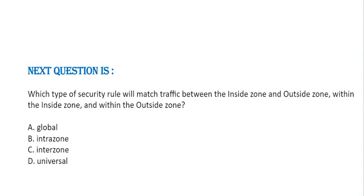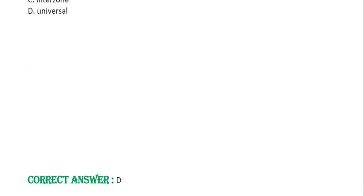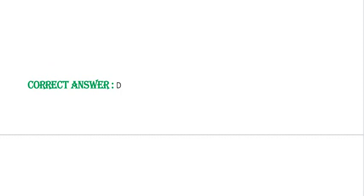Next question: Which type of security rule will match traffic between the inside zone and outside zone, within the inside zone, and within the outside zone? Option A: Global. Option B: Intra-zone. Option C: Inter-zone. Option D: Universal. Correct answer is Option D.